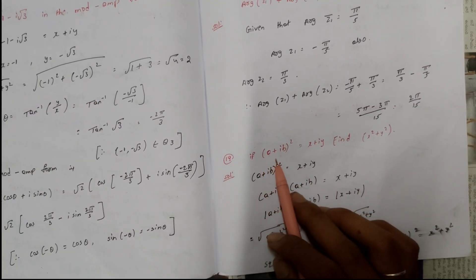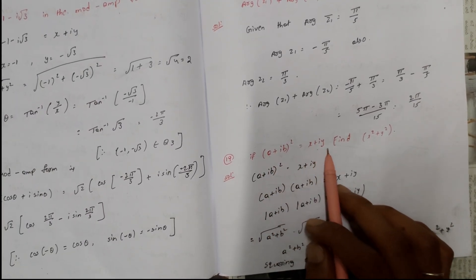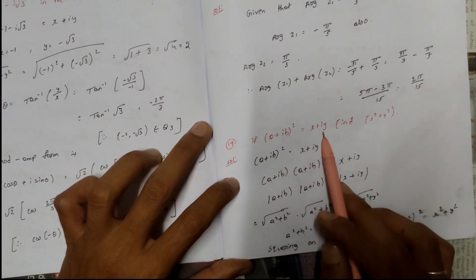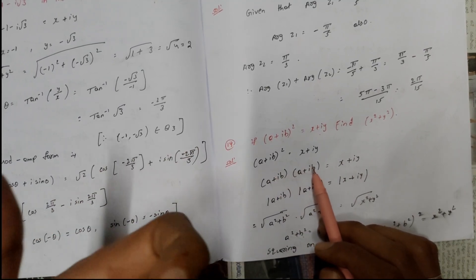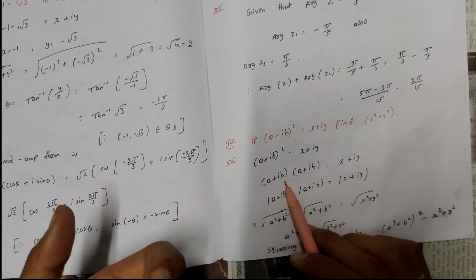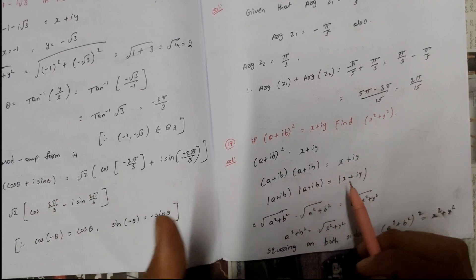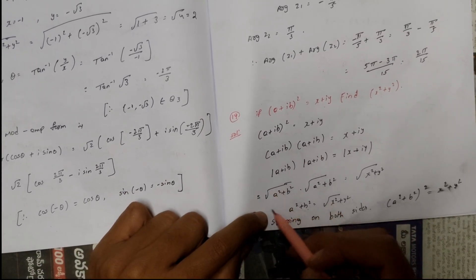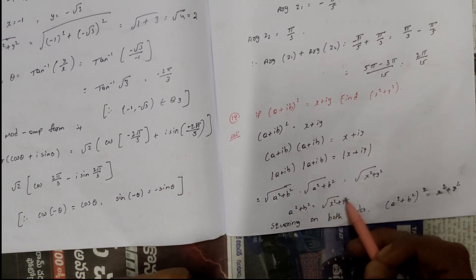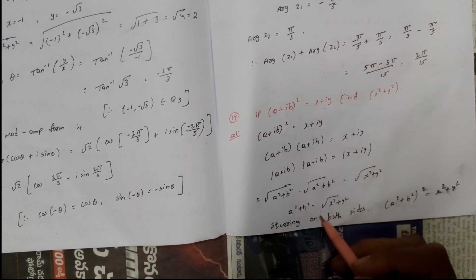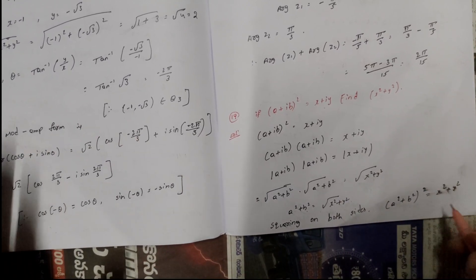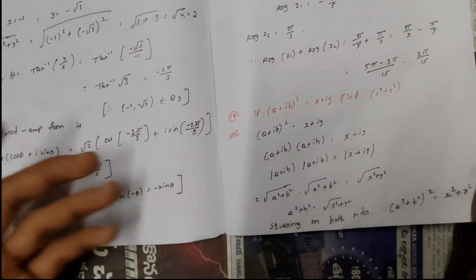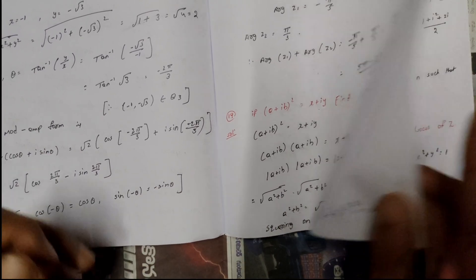Next important question: if (a+ib)² = x+iy, find x²+y². Take modulus on both sides: |a+ib|² = |x+iy|, so (a²+b²) = √(x²+y²). Squaring both sides gives (a²+b²)² = x²+y². This is a repeated important question.